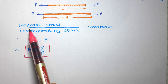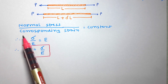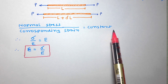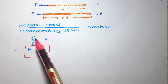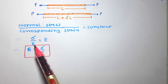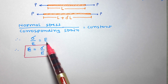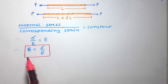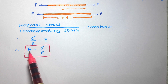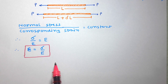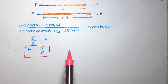The ratio of normal stress to corresponding strain is constant. So we can write: sigma upon epsilon equals E, which is the modulus of elasticity or Young's modulus. In terms of strain, epsilon equals sigma upon E. This is the required relationship between stress and strain in a one-dimensional stress system.